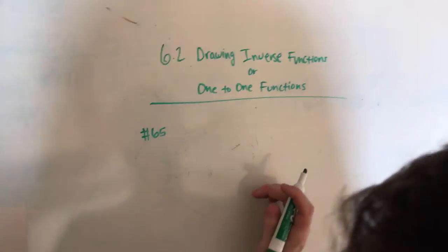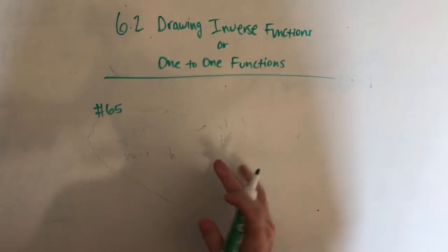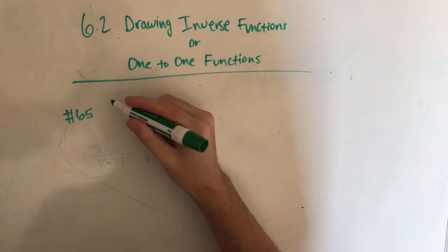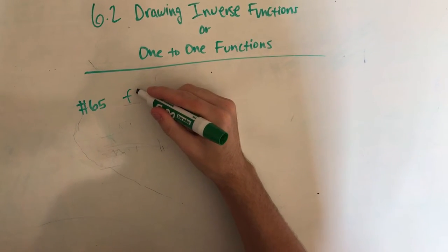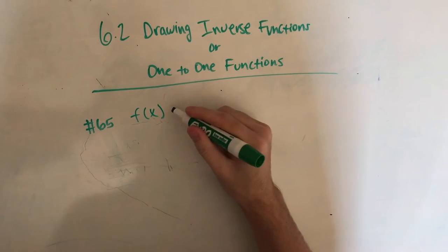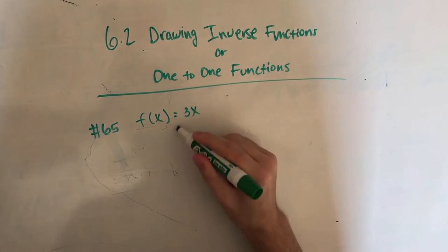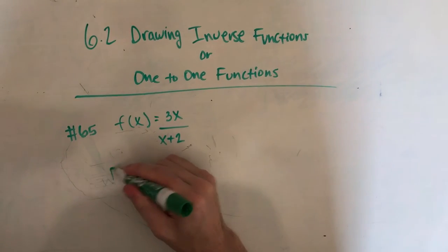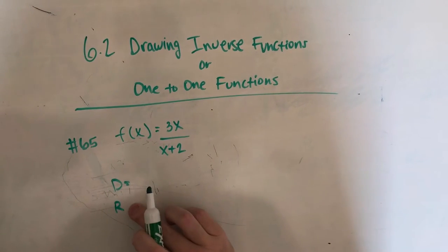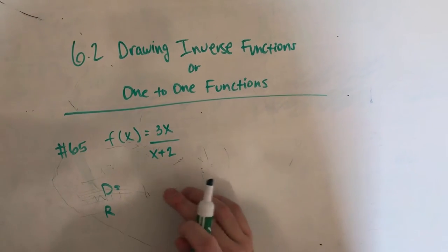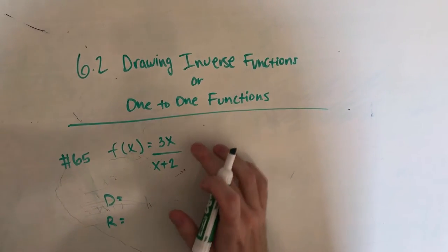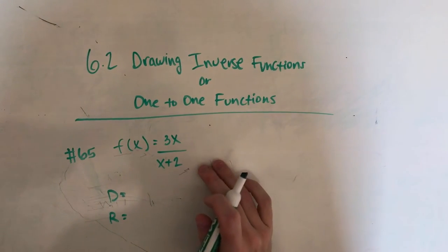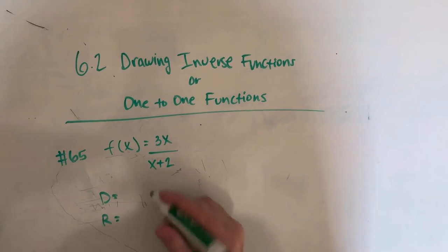I chose to do another one from 6.2. There are two different sections to it, so this is me explaining how the second section worked. Essentially, this is the problem that was given. We had f of x equals 3x over x plus 2. It's basically asking us to find the domain and the range, and then we have to find the inverse of the domain and range — so we're flipping these and swapping the signs. I'll explain.